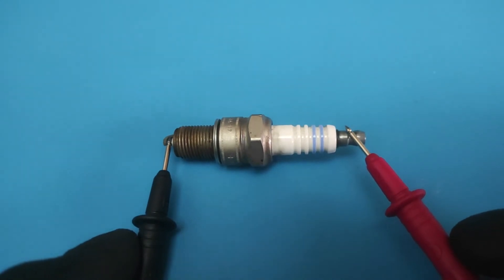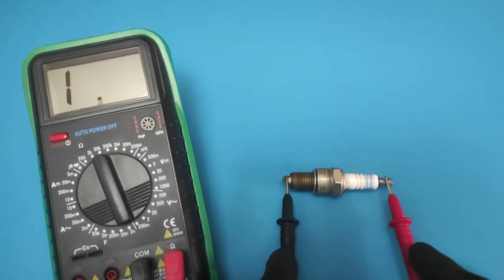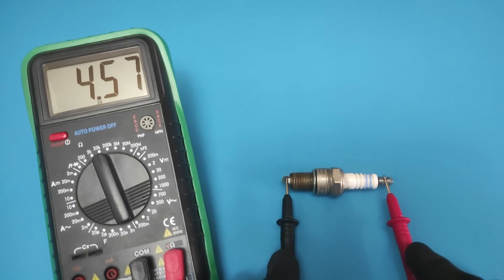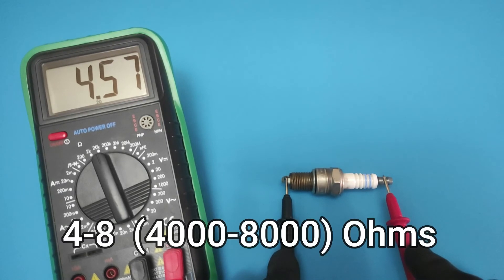Now it's time to evaluate the results. If the leads are making proper contact on the two parts of the spark plug and the spark plug is in good condition, the multimeter is expected to present you with a reading between 4 and 8 ohms.